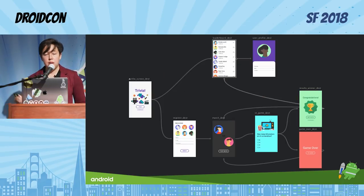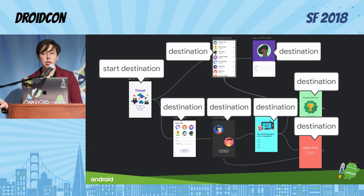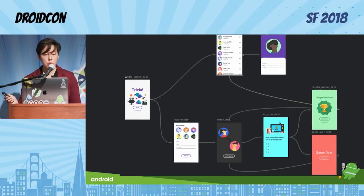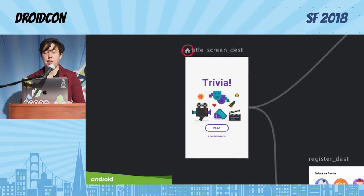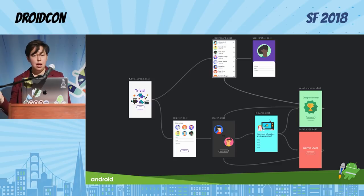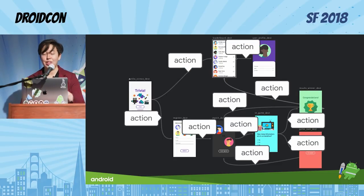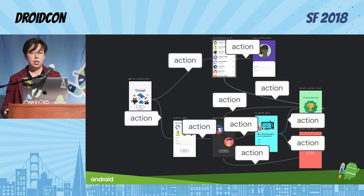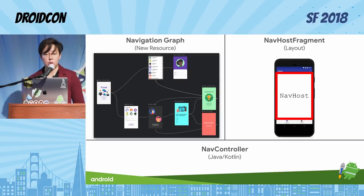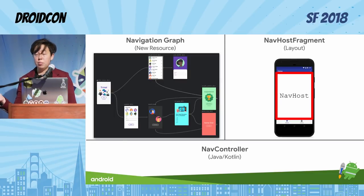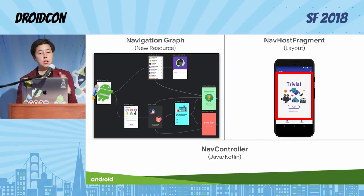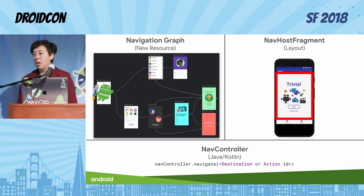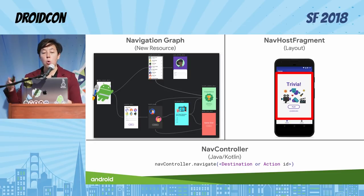The big picture is that there are three basic parts you need working in harmony to get navigation working with the navigation component. The first is a new resource — the nav graph — that's going to be in your res folder. Similarly, if you're doing the easy path of having a single activity with a bunch of fragments in it, you will add a widget called the nav host fragment to your layout. And then in your Java or Kotlin code, you're going to use a new object called the nav controller to actually do the navigation. The nav graph is made up of screens known as destinations, and all those arrows connecting destinations are what are called actions. They visualize the different possible paths a user can take through your app.